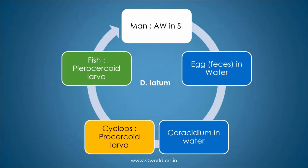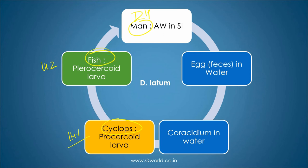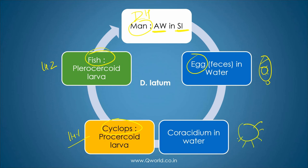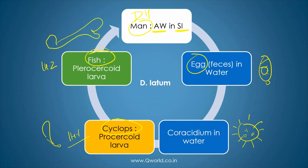To simplify this life cycle: the definitive host is man, intermediate host one is cyclops, and intermediate host two is fish. In the definitive host the adult worm lives in the small intestine, matures, and releases operculated eggs containing an unsegmented ovum. In water, a ciliated larva — the coracidium with three pairs of hooklets — hatches and is ingested by cyclops, where the procercoid larva develops, which later becomes the plerocercoid larva in fish.